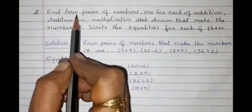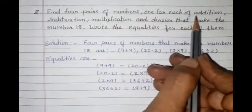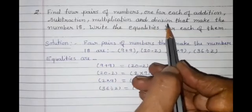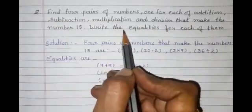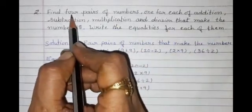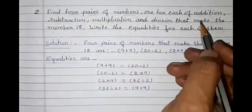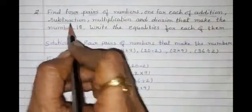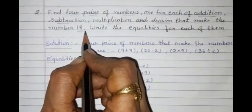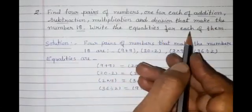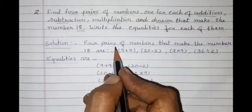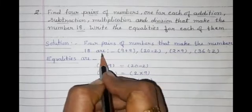Next, Question number 2: Find 4 pairs of numbers — one each for addition, subtraction, multiplication, and division — that make the number 18. Write the equalities for each of them. In this question, we make 4 pairs of numbers using the four operations that result in the number 18.